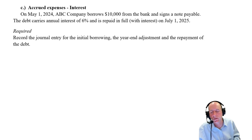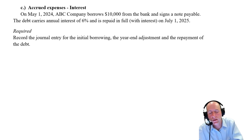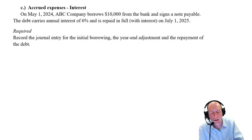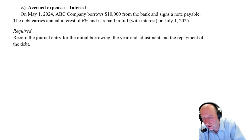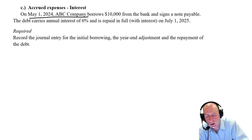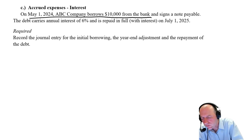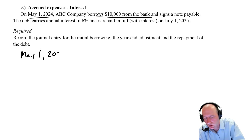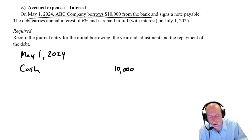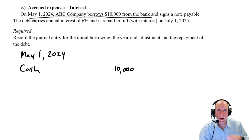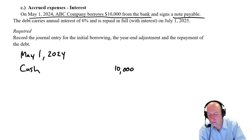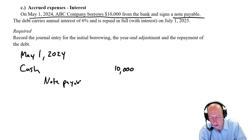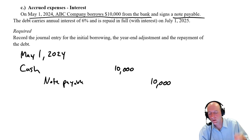For our accrued expense example: on May 1st, 2024, ABC Company borrows $10,000 from the bank and signs a note payable. The debt carries annual interest of 6% and is repaid in full with interest on July 1st, 2025. The initial journal entry on May 1st, 2024 is: debit cash $10,000, credit note payable $10,000.